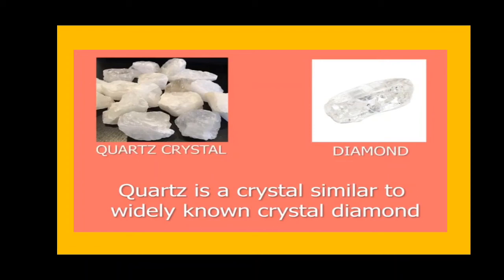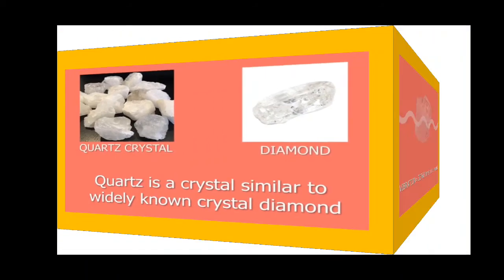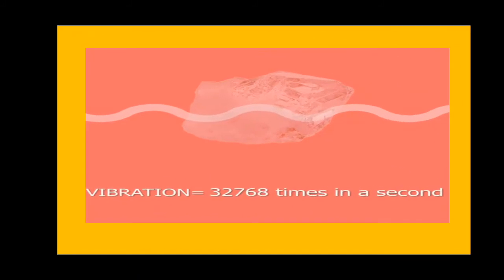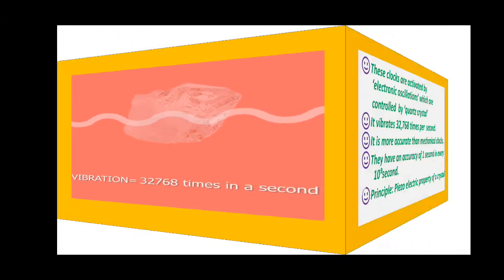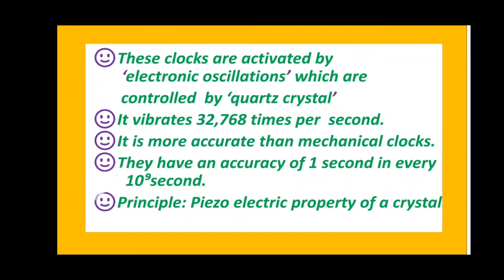Quartz is a crystal similar to the widely known crystal diamond. It vibrates 32,768 times per second. It is more accurate than mechanical clocks. They have an accuracy of one second in every 10 to the power of 9 seconds. It works on piezoelectric property.